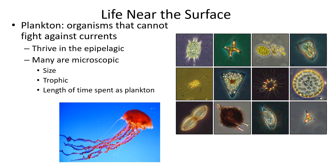One thing we're going to clearly define is the term plankton. You've heard of it — maybe from SpongeBob — but plankton is not referring to any specific organism. Instead, it refers to organisms that have to float around because they cannot self-propel themselves, at least not very much. They are at the mercy of currents and thrive in the upper 200 meters of the epipelagic. Many of them are microscopic. We can look at them by their size, trophic level, or the length of time spent as plankton.